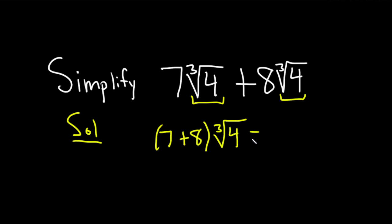And then seven plus eight is 15. You have 15 cube root of four. Another way to do it, so this is method one, method two.